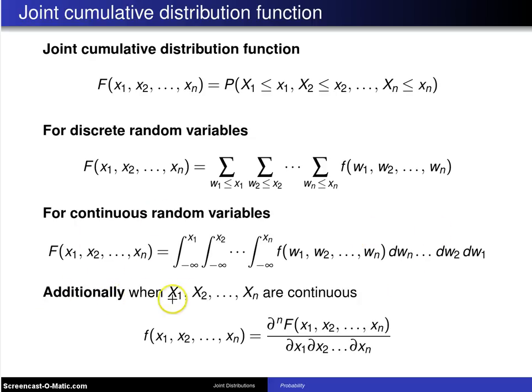Additionally, when X1, X2, up to Xn are continuous, if you have the joint cumulative distribution function and you want to go to the joint probability density function, you take n partial derivatives with respect to x1, x2, up to xn.